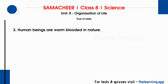The correct statement for diffusion is: Diffusion is the movement of particles from an area of higher concentration to lower concentration. Third question: Human beings are warm blooded in nature. This is true. Human beings are warm-blooded and can regulate their body temperature. Mammals and birds are warm-blooded in nature.